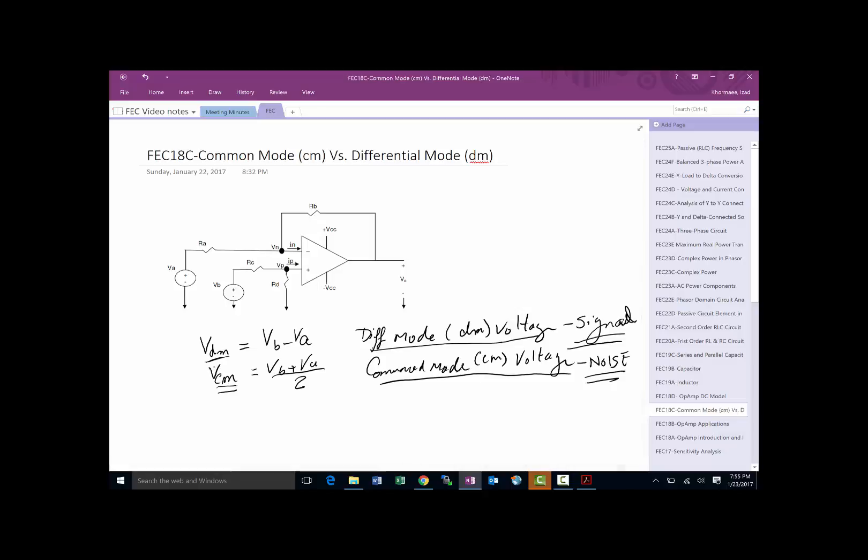If we carry this forward and rewrite these equations, we can rewrite VA as being equal to VCM minus one-half times VDM, and VB is equal to VCM plus one-half VDM.